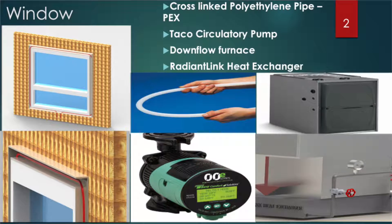The picture shows a rough layout of the piping system in our floor with a window being studied. To the left there is a 3D model of the window being studied. The pipe is embedded in a casing around the window frame. In the middle of the slide there is a cross-linked polyethylene pipe, or a PEX pipe.